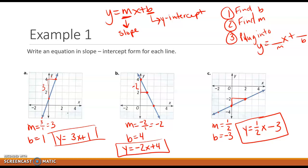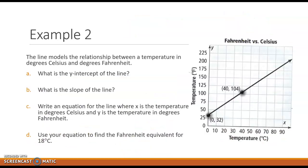Again our steps were find b, find m, and then we just plug into our equation. So here we have another example. The line models the relationship between a temperature in degrees Celsius and degrees Fahrenheit. What is the y-intercept of the line? So the y-intercept of the line is where x is zero. So here I can't, you know, it's not giving me a specific on the line but I do know that we are at zero, 32. And so my y-intercept is 32.